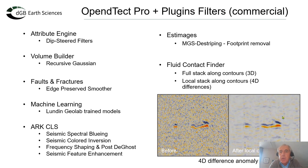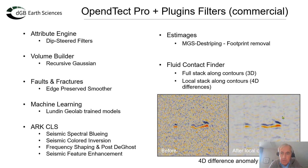There's a plugin from Estimage for removing footprints, called MGS destriping. And we have our own fluid contact finder for highlighting hydrocarbon anomalies. In 3D we do that by stacking along the contours, and if we have 4D difference cubes, we can also highlight these by doing this on a local restricted area along the contours.